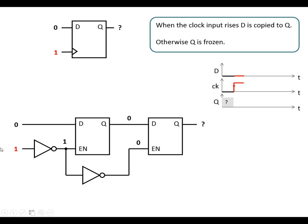Let's make the clock input rise. On the rising edge, we've got a 0 at the enable of the first latch, which means it is going to be frozen. So whatever was at the D input is now frozen and held in the middle. We've now got a 1 because of the inverter, so we've got a 1 at the enable of the second latch — D is copied to Q. This 0 is now copied to the output.